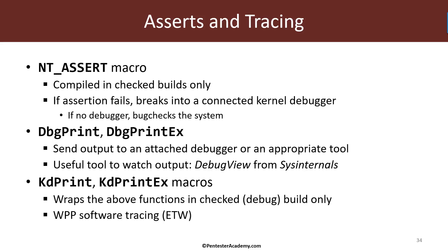What happens when an assertion fails in kernel mode? If a kernel debugger is connected to the target, the debugger will break and indicate the assertion failed, showing the line number where it happened. You can then decide whether to continue or ignore the assertion and keep running. However, if there is no kernel debugger attached, you get a bug check — a blue screen — and the dump file that is created will point to the instruction that caused the assertion failure.